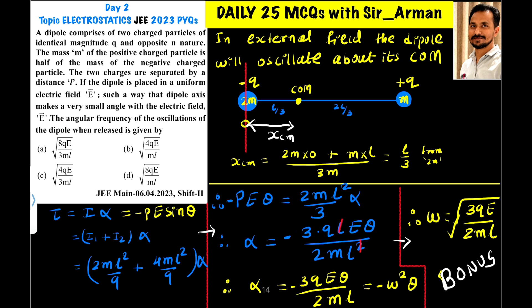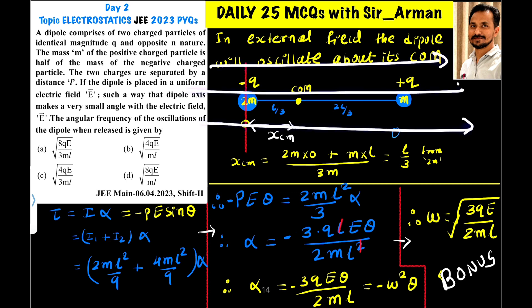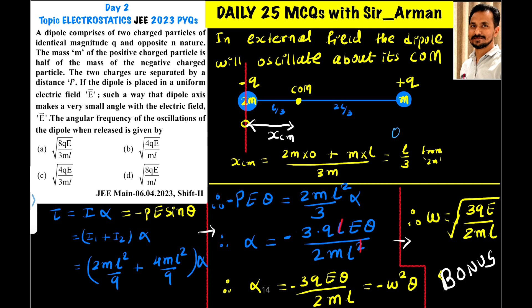Now if the dipole is placed in a uniform electric field E such that the dipole axis makes a small angle theta with the electric field, the electric field will try to bring the dipole back to alignment — parallel to the field axis. On displacing the dipole by a small angle, the electric field generates a restoring torque, given by the equation τ = pE sinθ.